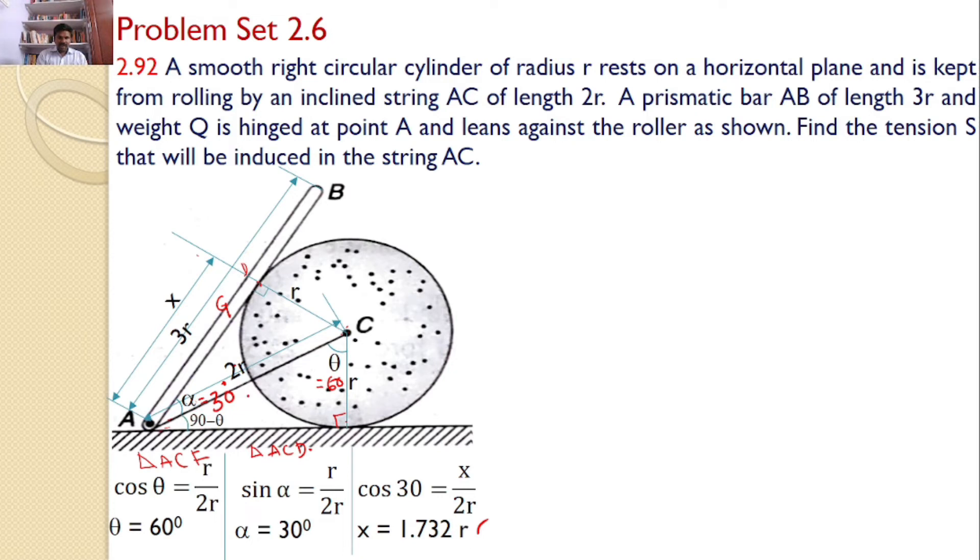Since this value is theta, this value is 90 minus theta which is 90 minus 60, that is nothing but 30. Hence, AB makes an angle 60 degrees with the horizontal. Let us consider the free body diagram of the prismatic bar AB. Here, it is a hinged support, so two reactions will develop here and there is a string force.